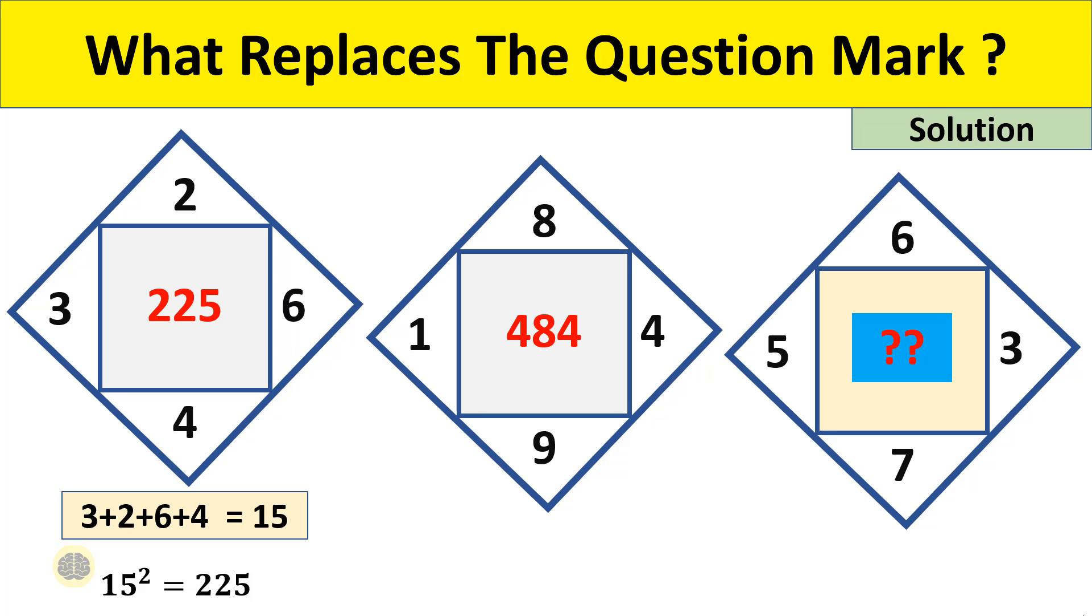Similarly in box 2, consider numbers outside the inner square and add all the numbers: 1+8+4+9 = 22. Now square the number: 22² = 484.